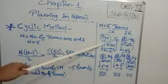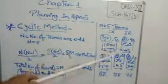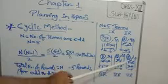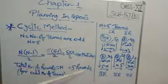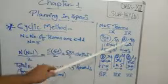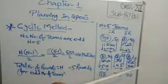So the total number of matches will be 10: 1, 2, 3, 4, 5, 6, 7, 8, 9, 10 matches in the whole fixture. And there will be 5 rounds: 1, 2, 3, 4, and 5.